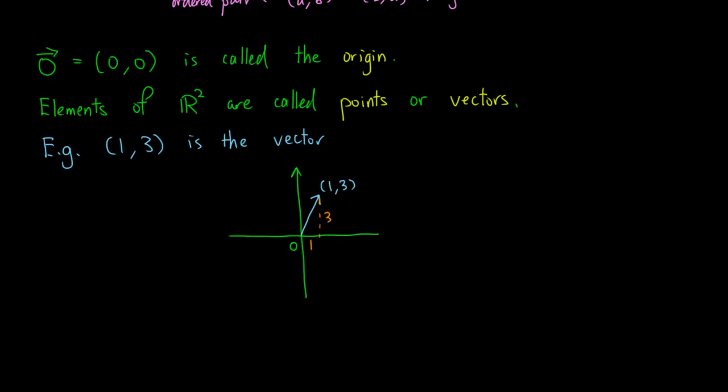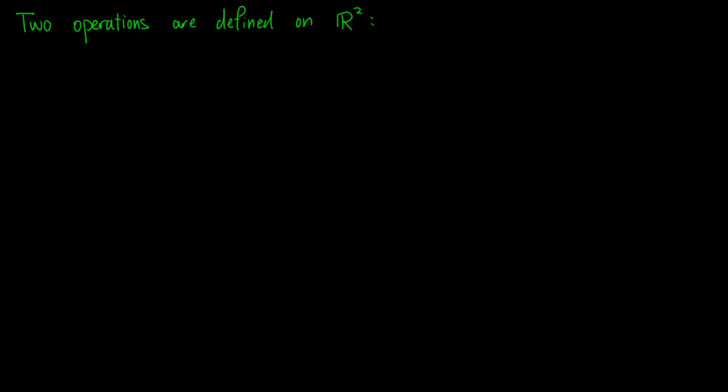For example, the point (a,b) is the vector whose tail is at the origin and the tip is at the point (a,b).